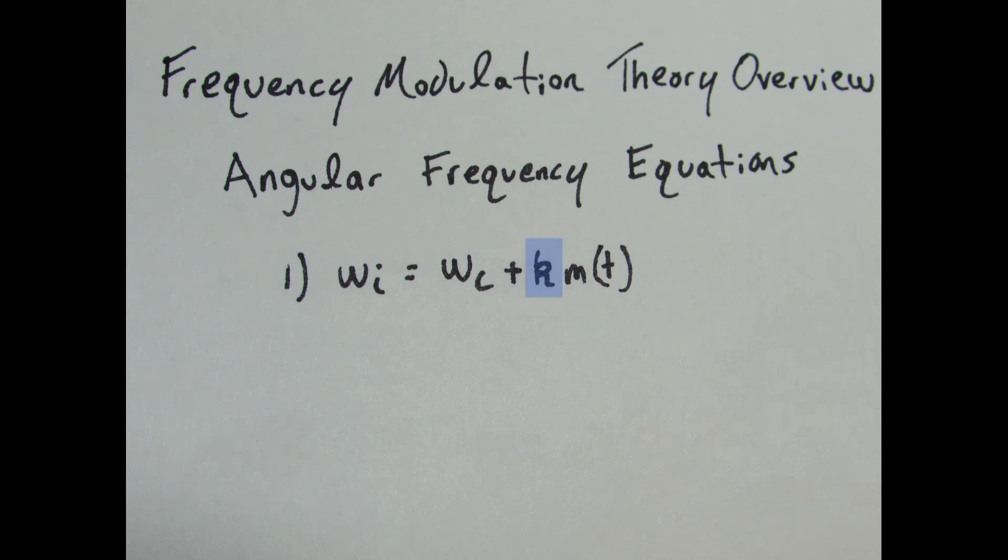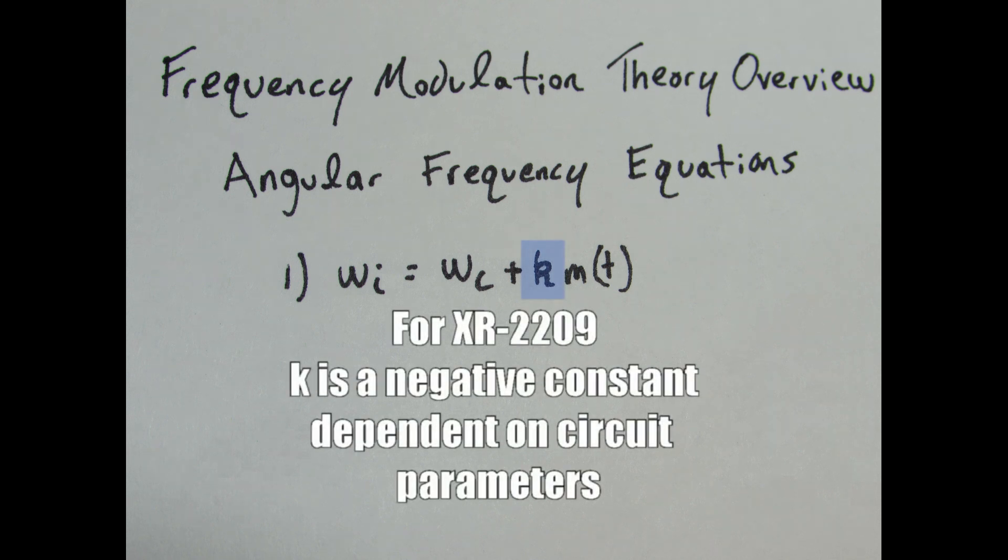In terms of understanding frequency modulation, the voltage to frequency conversion, the constant k in this equation, is not critical for understanding. The value is noted on the VCO's datasheet, but put simply, it determines how sensitive the frequency output is changed per a change in voltage.